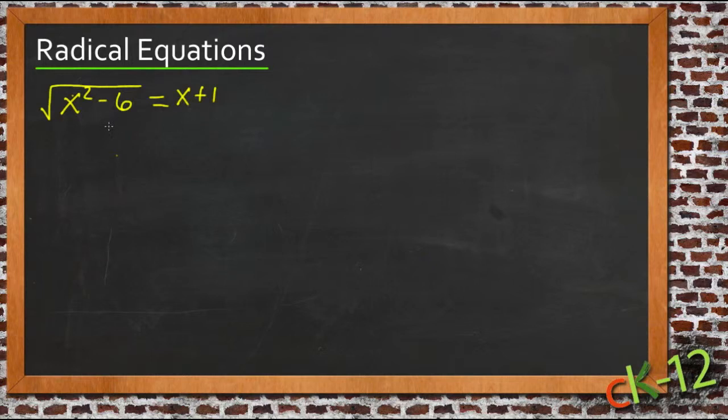When we square, one side will get a squared term on it. Let's see what happens as we go through this step by step, since it is slightly different. Our first step is to get rid of the square root symbol, so we need to square both sides.